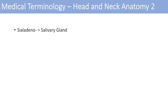The next group of head and neck anatomy terms: sial adeno stands for salivary gland. Adeno always stands for gland, and sial stands for salivary — anything with adeno typically involves a gland. Tracheo stands for trachea, and that's easy to remember. Tracheitis is inflammation of the trachea.